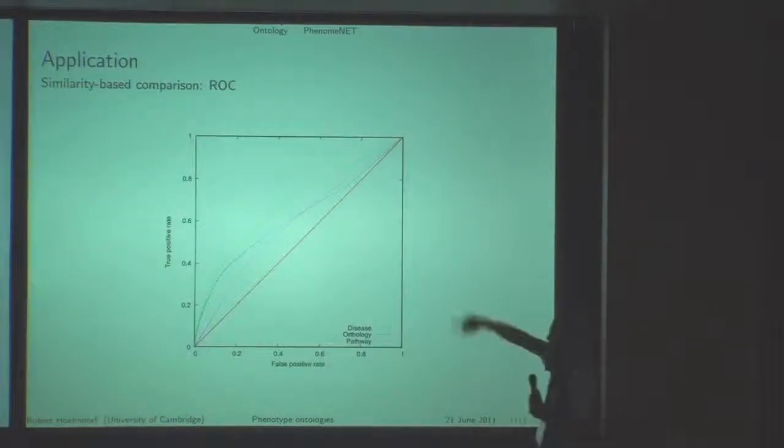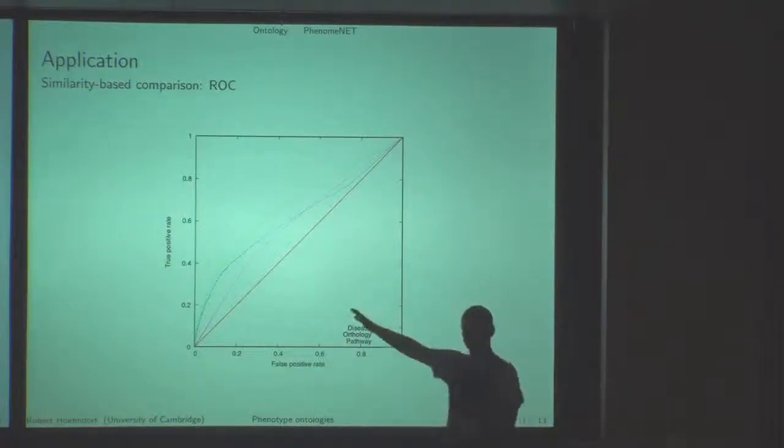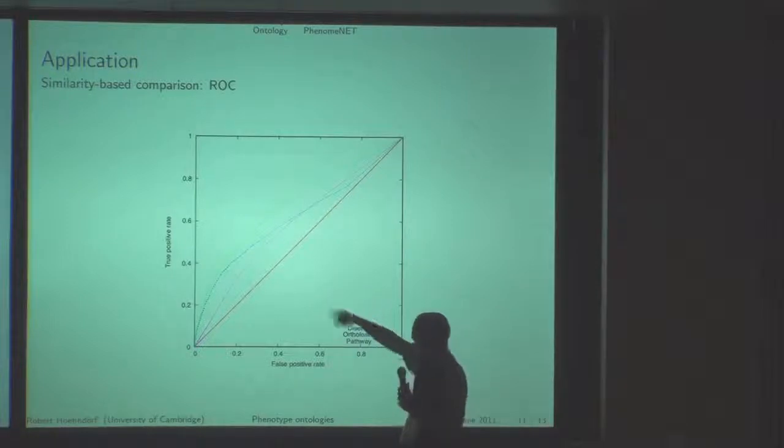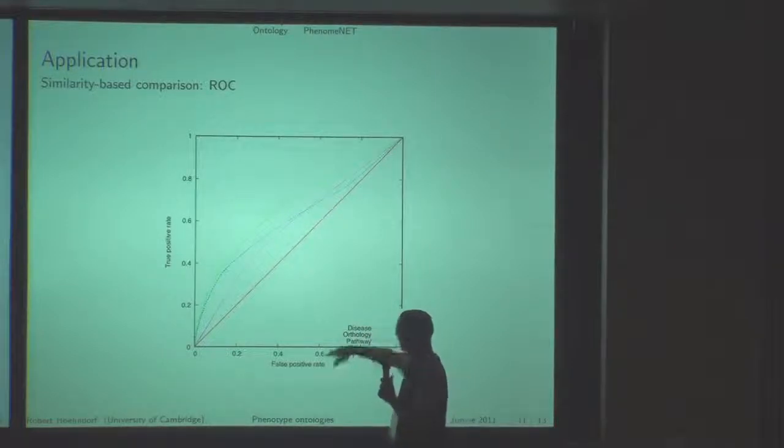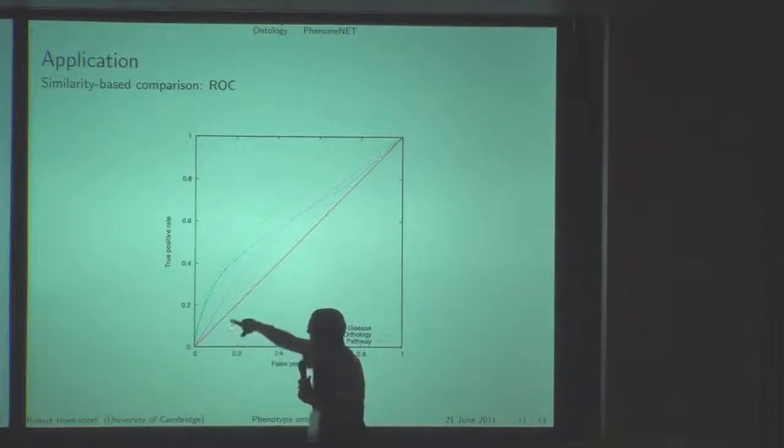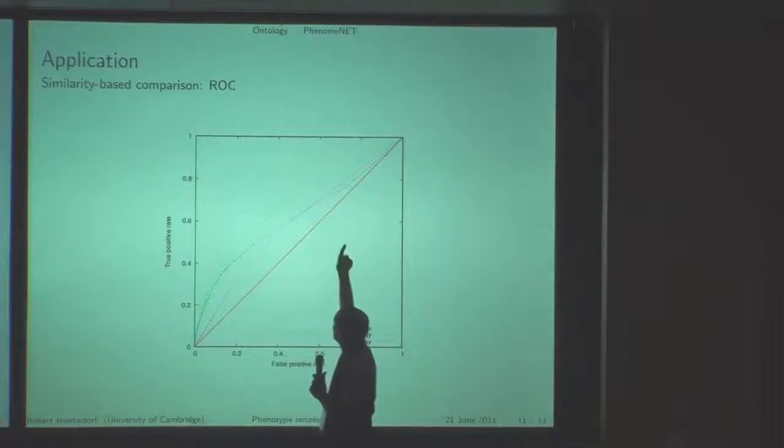When we look at this, we can draw ROC curves. It's not really a ROC curve—this is a true positive rate versus false positive rate. We can do this for disease, orthology, pathway. The random line would be a random classifier here.